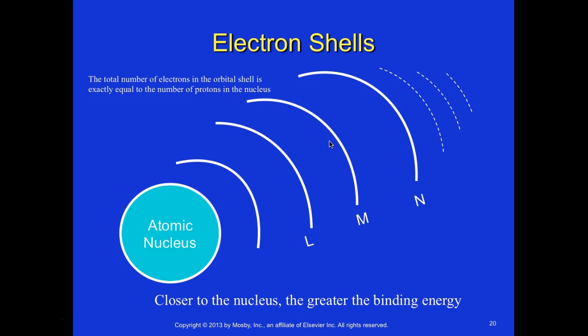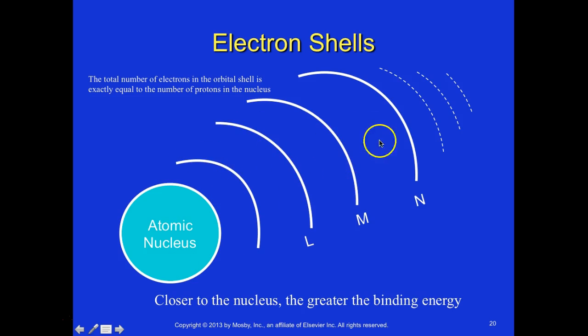Looking at the electron shells: you have the nucleus at the center, and shells are labeled K, L, M, N, O, P, Q going outward. The total number of electrons in the orbital shells is exactly equal to the number of protons in the nucleus. The closer to the nucleus, the greater the binding energy.